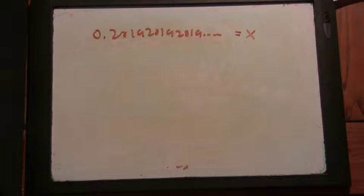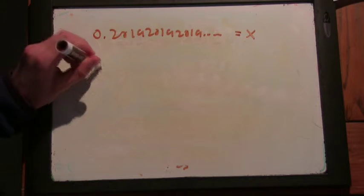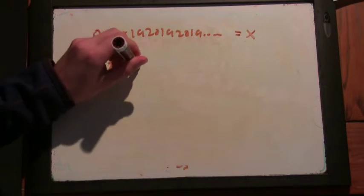Then I'm going to multiply both sides by 10,000. So we get 2019.2019 repeating.